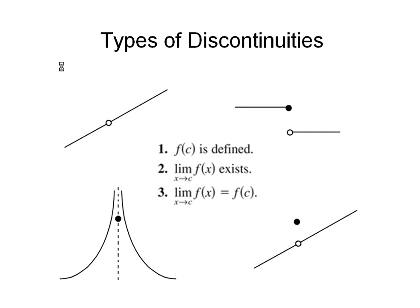Here are some types of discontinuity — where is the function not continuous? You're really just looking for breaks or gaps. A general rule: if you can trace the entire function without lifting your pencil, it is continuous everywhere. If you have to lift your pencil to get to another part of the graph, then it must be discontinuous.